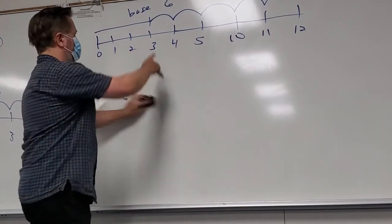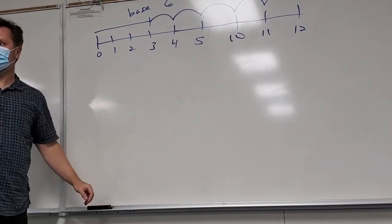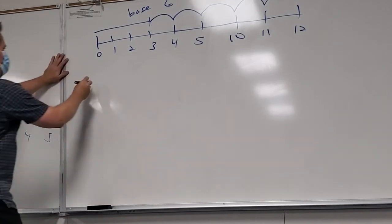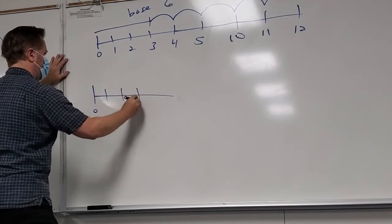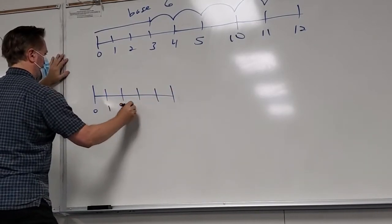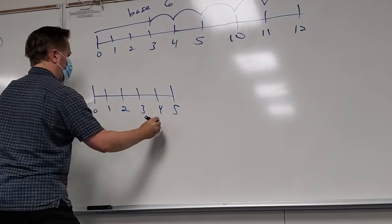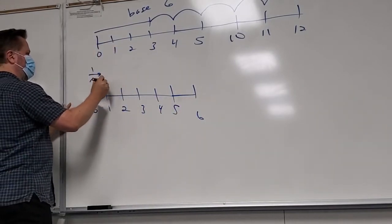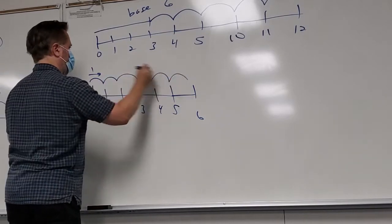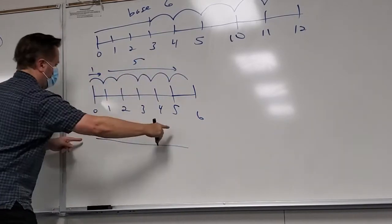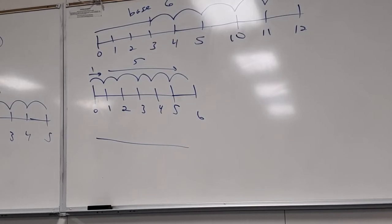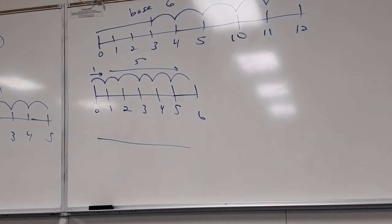To show a young elementary student that one plus five equals five plus one, you do one plus five on one number line, then five plus one on another number line. That's what they mean by using two different number lines — you just have to make a number line appropriate for that base, putting ten in the right place.